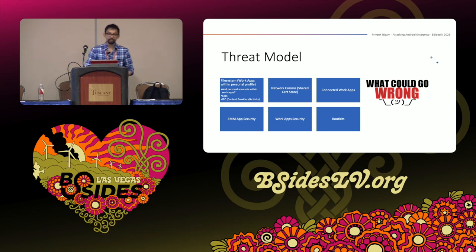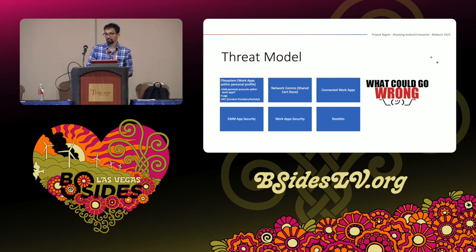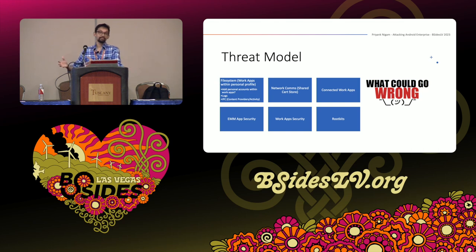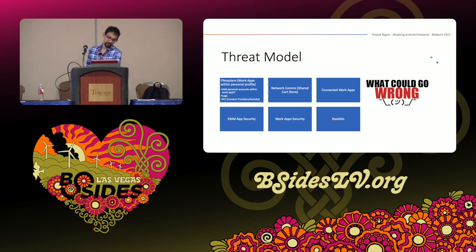Let's look at the threat model — what could go wrong on a mobile device. We'll cover inter-system communications, for example what if you install a work app on a personal profile or a personal app on a work profile. We'll look at network communications, connected apps, EMM app security, work application security, and finally the rootkit threat — where your device is compromised — which is a big part of the threat model.